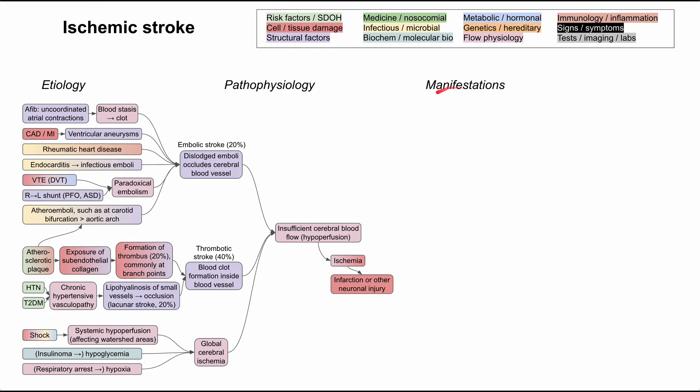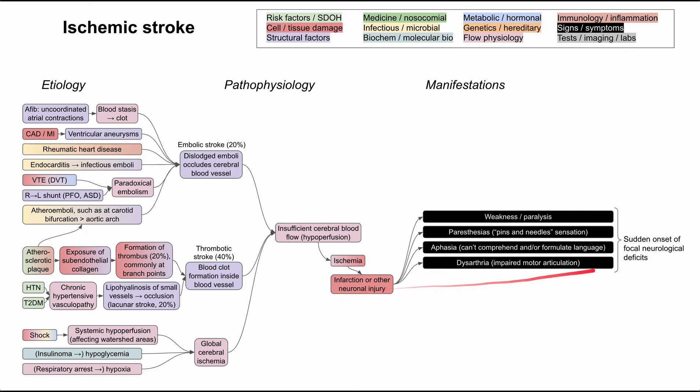Next, let's briefly mention the manifestations of ischemic stroke. Now, we can spend a whole video on this, talking about how certain areas of the brain or certain vessels lead to certain manifestations, but I'm giving a summarized version just for the purposes of this flowchart. You can firstly have a sudden onset of focal neurologic deficits.